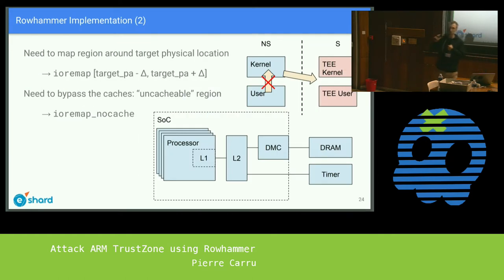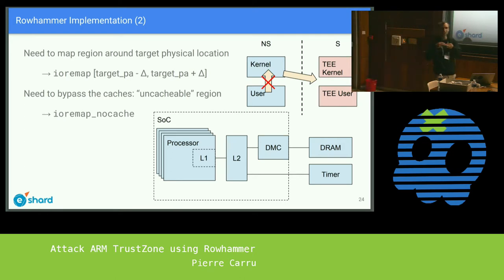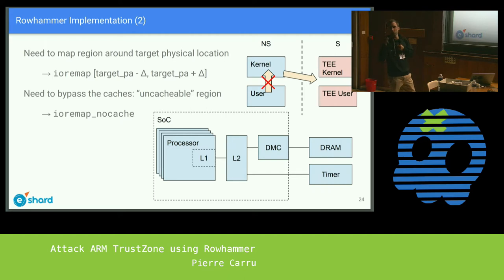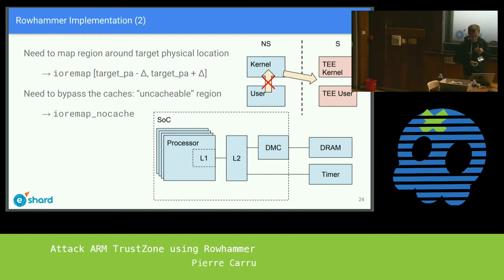Once you know how to access rows, the next issue is how to bypass the caches. In most rowhammer implementations this is done using cache eviction techniques. But since we are in kernel space, we don't have this issue — we can decide which memory attributes our mapping uses. This is something the kernel does all the time to access devices, like a memory-mapped timer you don't want cached. We can apply that same non-cached mapping to RAM, which is an advantage since we are in kernel space targeting the secure OS.